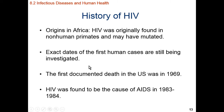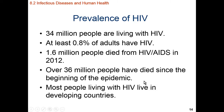HIV is human immunodeficiency virus. AIDS is acquired immunodeficiency syndrome. It's possible for someone to contract HIV and not necessarily have AIDS. Globally, there's about 34 million people living with AIDS, and almost 1% of the global adult population has HIV. This is a currently incurable disease that has infected approximately 1% of the global adult population, and it is still spreading very rapidly. In 2012, 1.6 million people died from HIV.